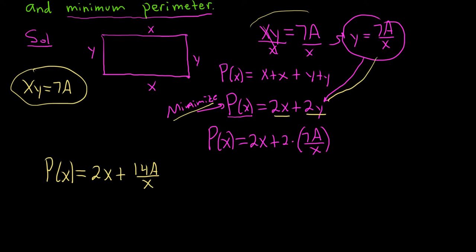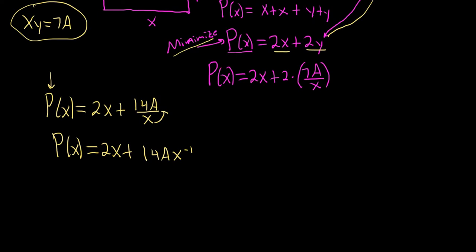We'll use the second derivative test — find the critical numbers and plug them into the second derivative, looking for a minimum. Rewrite p of x as 2x plus 14a times x to the negative 1 so we can differentiate. Step 1: take the first derivative. p prime of x equals 2 minus 14a times x to the negative 2.